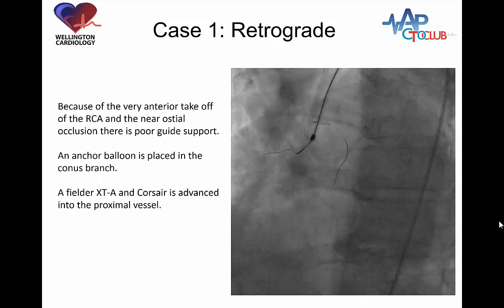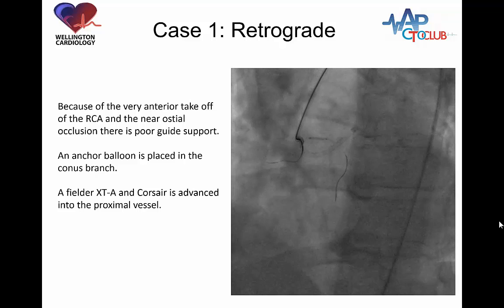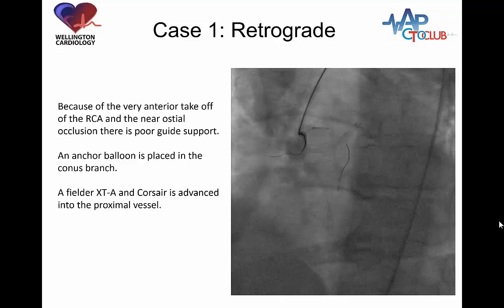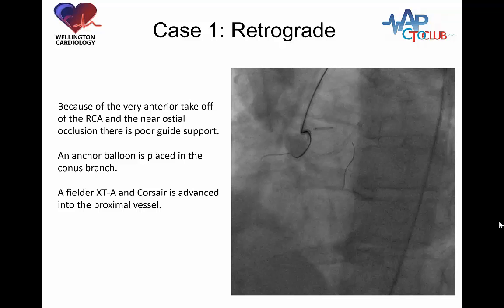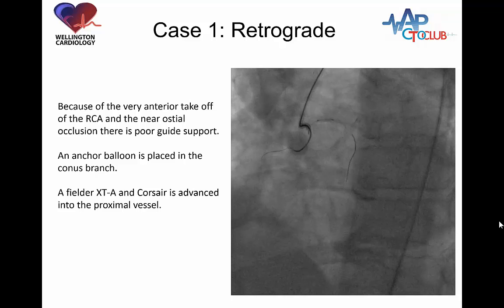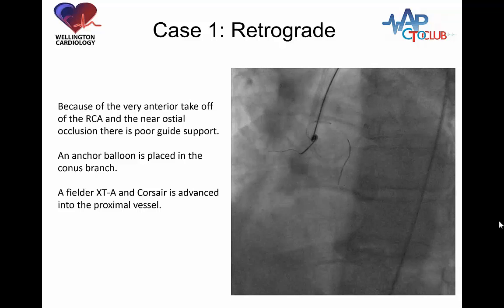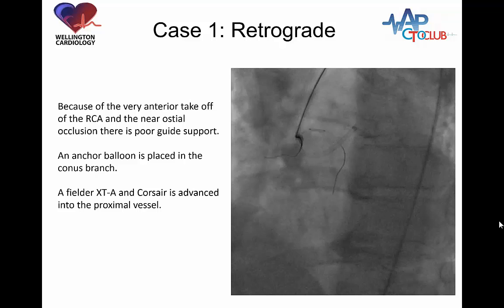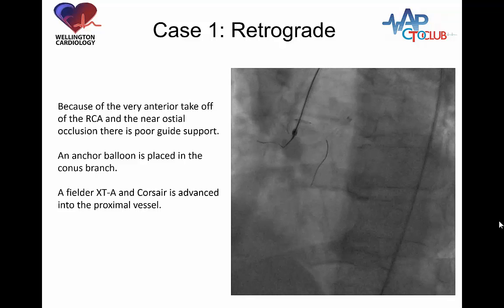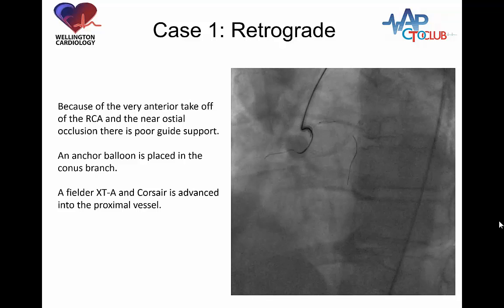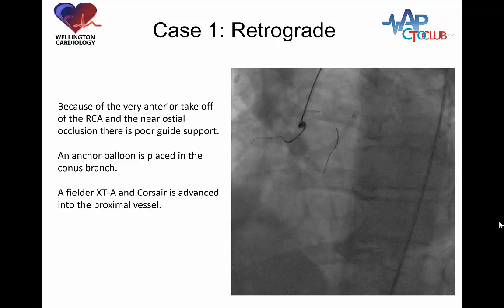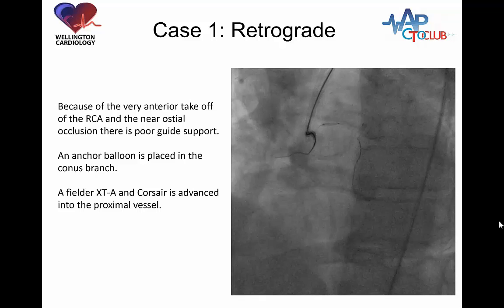We start with some antegrade preparation. There are a number of reasons for this: first, it reduces the amount of time you need to have gear in the retrograde system, potentially reducing ischemia, and it may also provide a target for the retrograde system. The important thing here is that we don't want to use a stiff wire because the course of the vessel is somewhat ambiguous. So we have taken the Corsair and XTA, a relatively soft wire, and made progress down the right coronary artery. Balloon anchoring in the Conus branch was used to provide support.